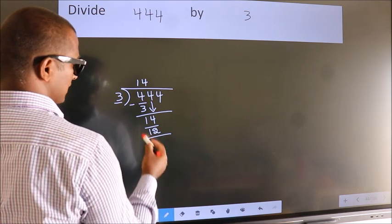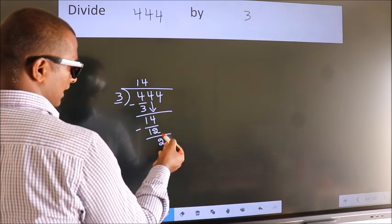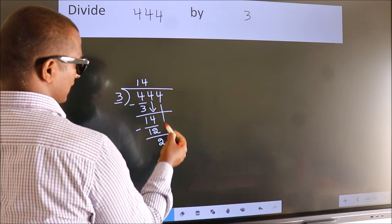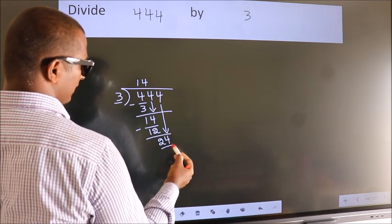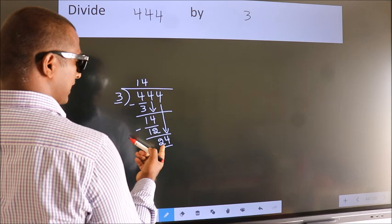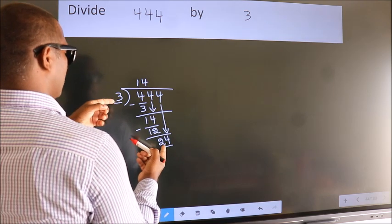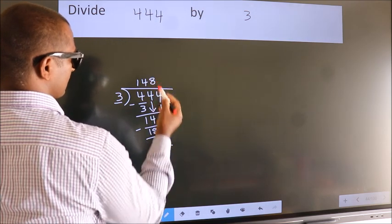Now, we subtract. We get 2. After this, bring down the beside number. So, 4 down. So, 24. When do we get 24? In the 3 table, 3 8s 24.